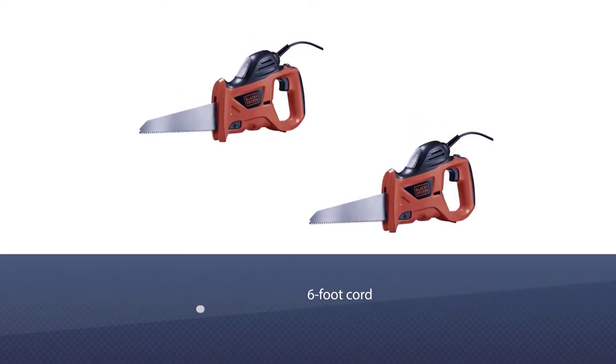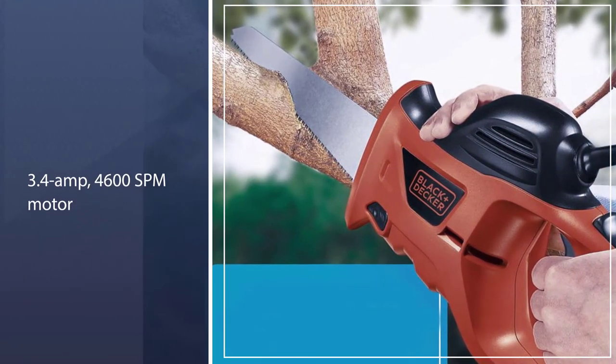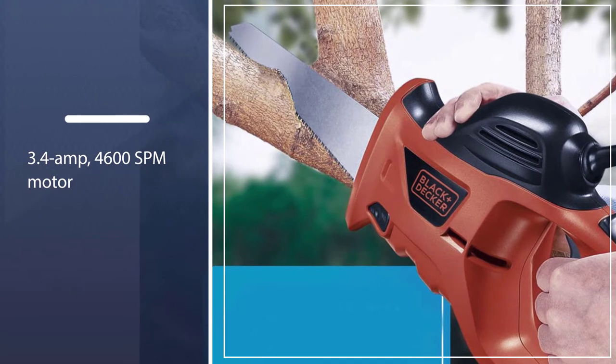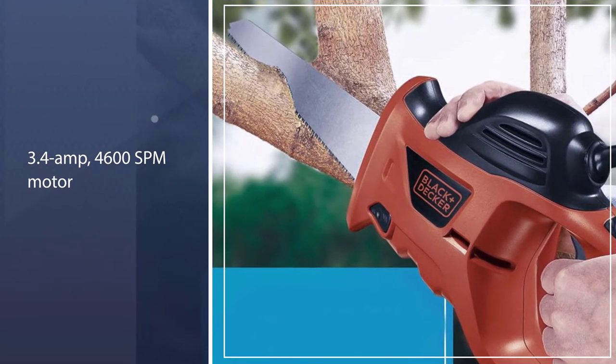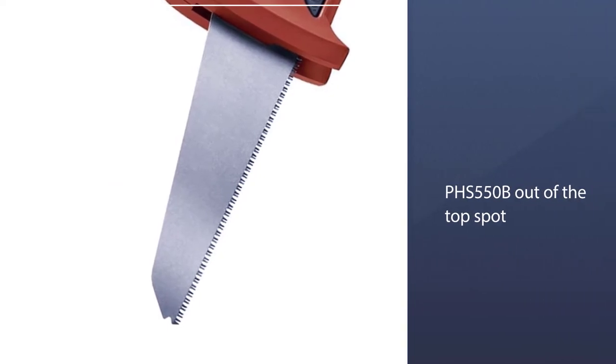Despite its appearance, this is not a toy tool. With a 3.4 amp, 4600 SPM motor, it packs a surprising punch for a power tool weighing less than six pounds. We found a couple of drawbacks that keep the PHS550B out of the top spot.